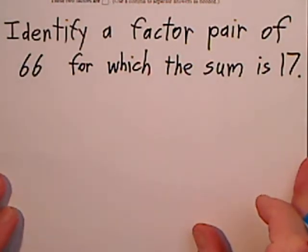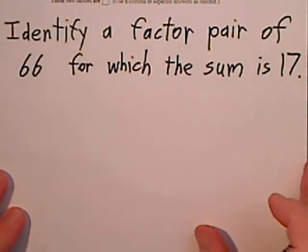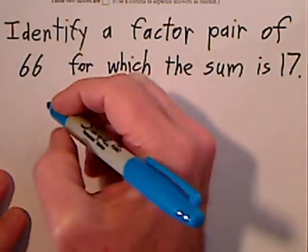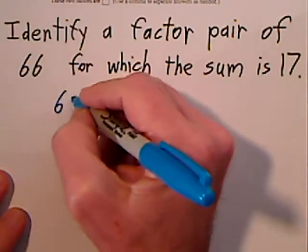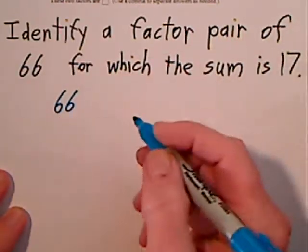We're asked to identify a factor pair of 66 for which the sum is 17. Go ahead and grab the 66. List all the factors in a systematic way.